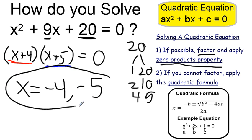So negative 4 and negative 5 are the two solutions to my original quadratic equation. If I plug either of those values into my original equation up here, it would make it true. Thank you.